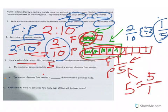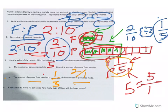Okay, part B. The amount of cups of flour needed is blank of the number of pancakes made. Well, if we're going flour to pancakes, we're looking at one-fifth. That's our original ratio, flour to pancakes. If you said two-tenths, you're not wrong. You're just not simplified yet. So you could simplify that to one-fifth.